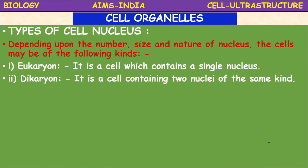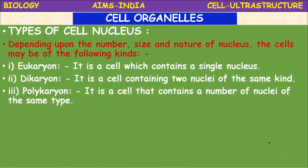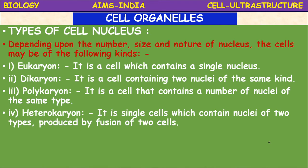If only one nucleus is present, the cell is called a eukaryon. Dikaryon means the cell contains two nuclei of the same kind. Polykaryon: 'poly' means many — a cell that contains a number of nuclei of the same type. Heterokaryon: 'hetero' means different — a single cell which contains nuclei of two types, produced by fusion of two cells.